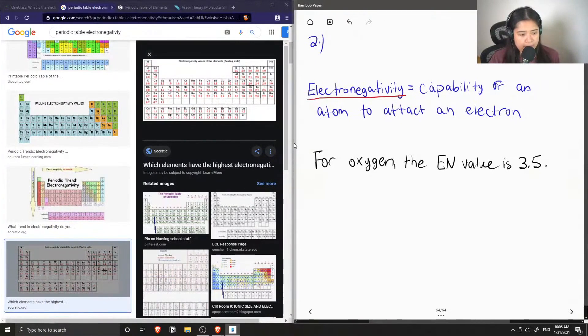So because oxygen has a high electronegativity value, this has a great effect on some substances that contain oxygen, and the most notable is water. So here's a molecule of water, which everyone knows to be H2O.